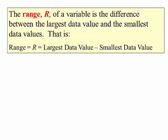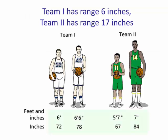The weakness of the range however is only looking at two values. It only looks at the largest and the smallest, and none of the values in between have an effect on the range. For this example, Team 1, the range is 6 inches. For Team 2, it's larger, it's 17.